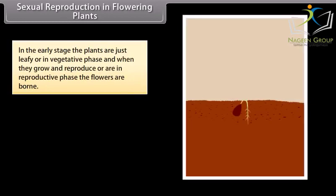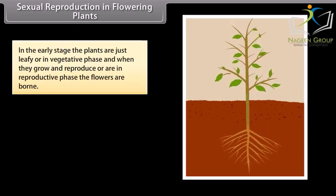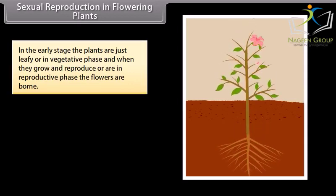Sexual reproduction in flowering plants. In the early stage, the plants are just leafy or in vegetative phase and when they grow and reproduce or are in reproductive phase the flowers are born.